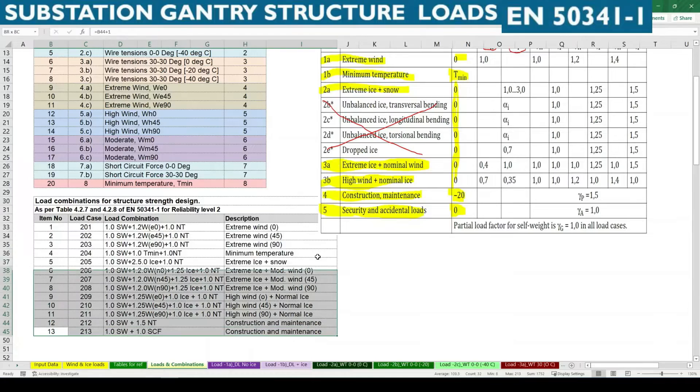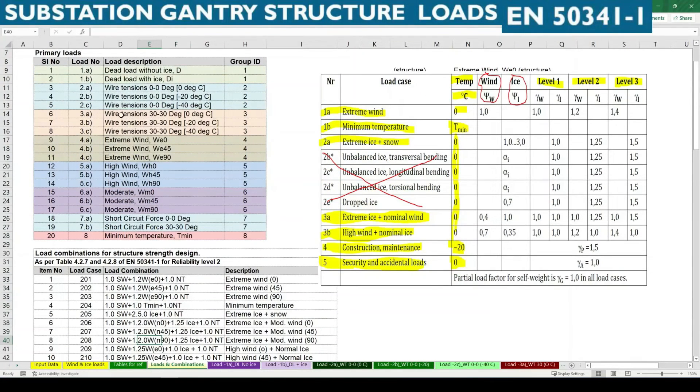So these are the load combinations we need to consider. Again this load combination is general for wire tension at 0 degree. So we will see what is this 0 0 and 30 30.